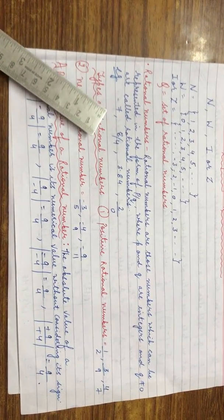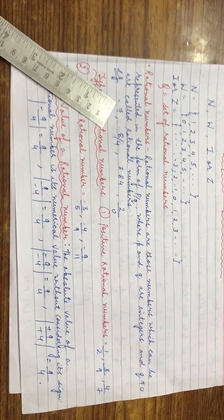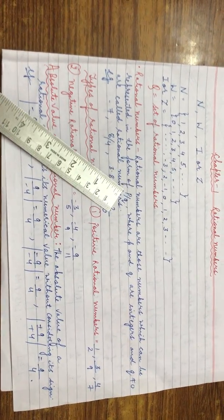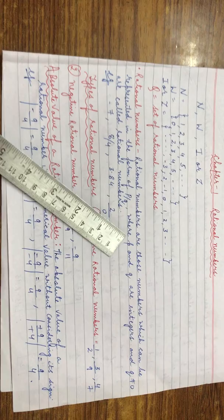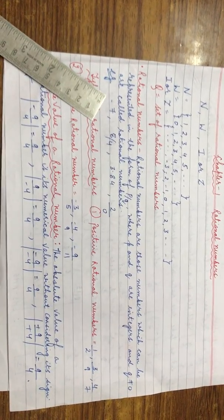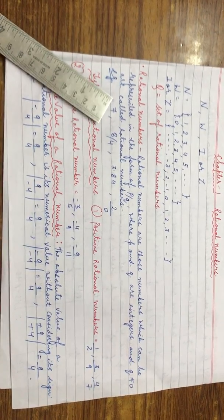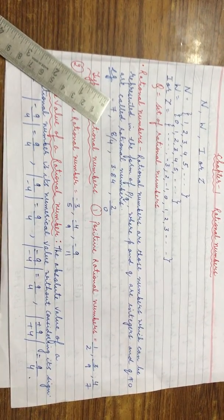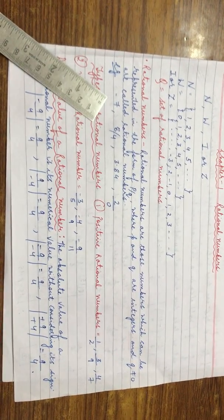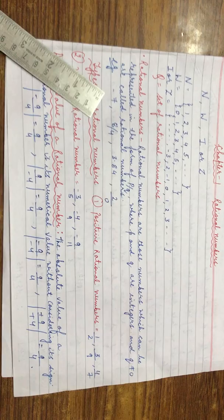Now we see three examples. Minus 7: The condition for a rational number was it should be in the form of P upon Q where P and Q are integers and Q should not be equal to 0. Minus 7 is the value of P. Here Q is missing, so the value of Q is 1. Minus 7 upon 1 is a rational number.